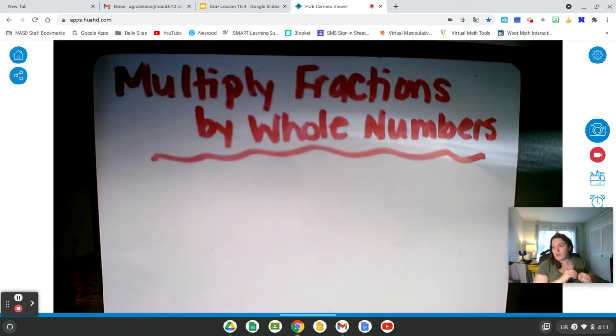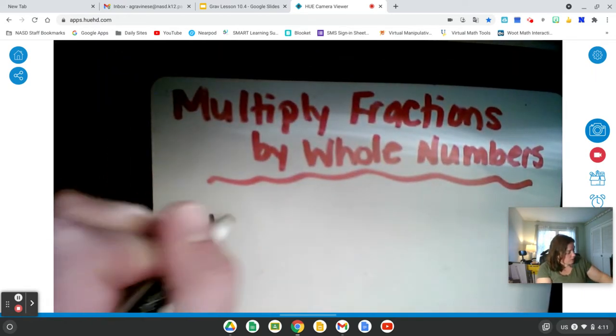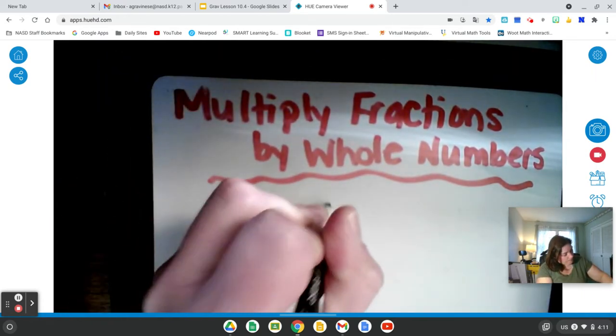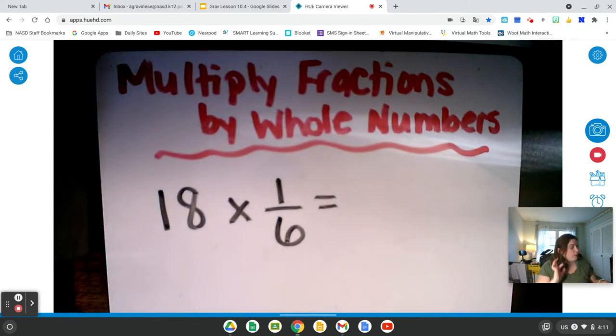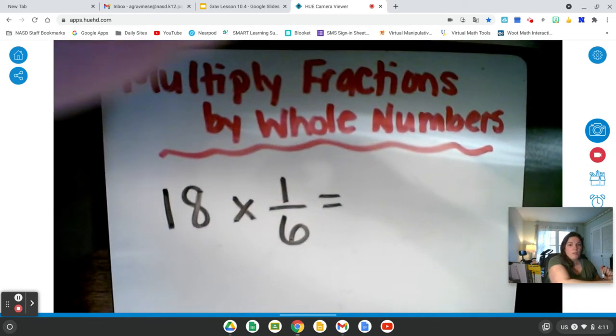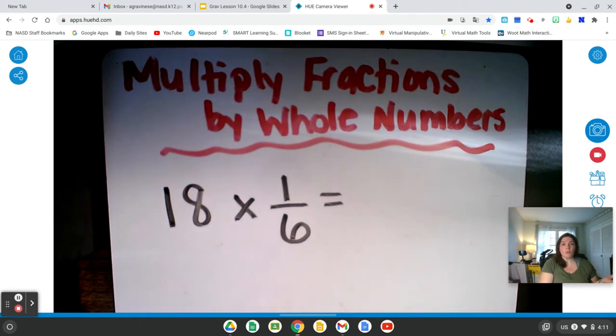We're going to start off with 18 times 1 sixth. Now this looks like something that we did before in lesson one when we found part of a whole, because we're taking 1 sixth, which is the part, and we're multiplying it by a whole, 18. So if you needed to, you could draw a bar diagram for that problem. However, today I'm just going to show you how to multiply fractions and whole numbers using the steps.